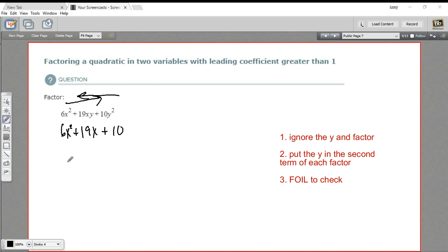And then let's see if we can factor this. We've got a leading coefficient greater than 1, so I want to list my factors. I could have 1 and 6 and 2 and 3. Here I've got 10, so that'd be 1 and 10 or 2 and 5.